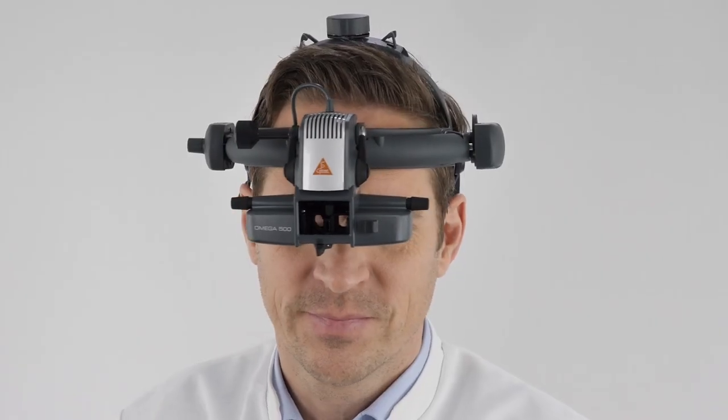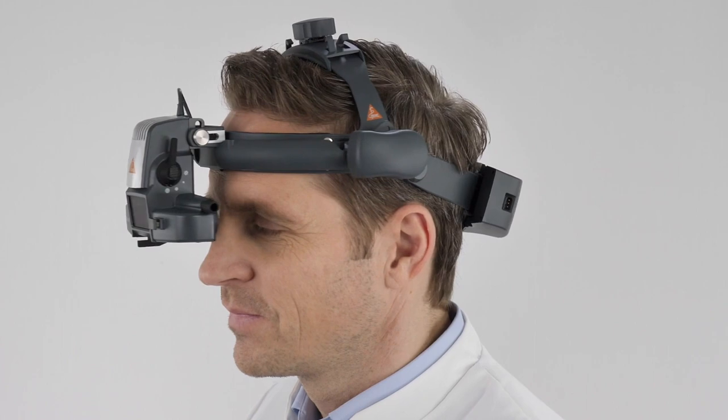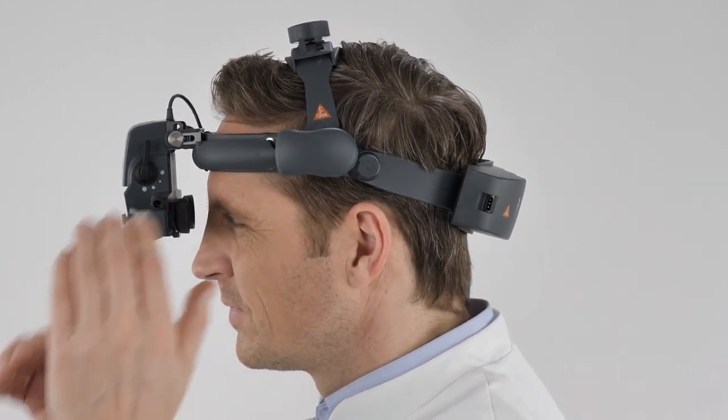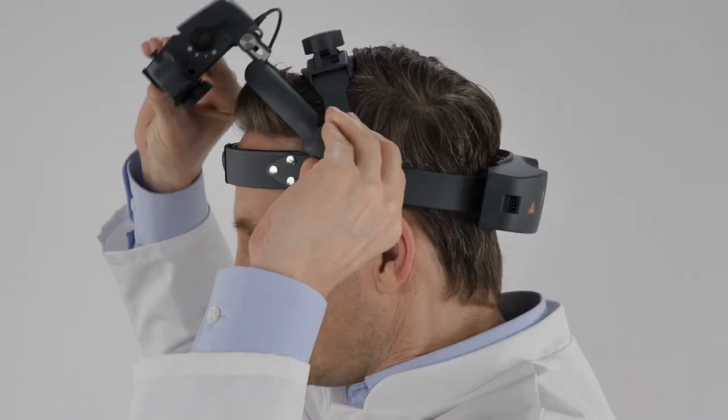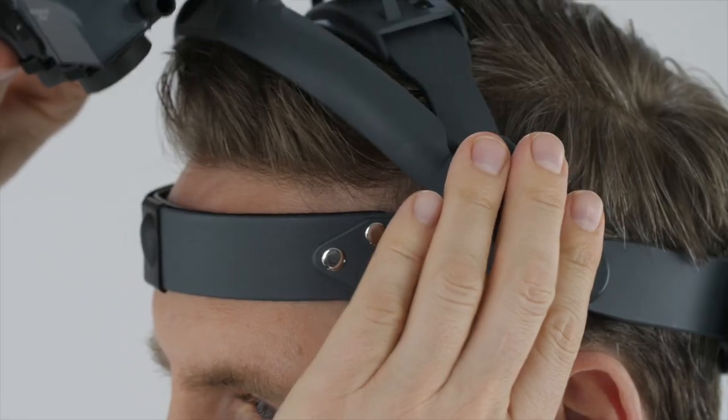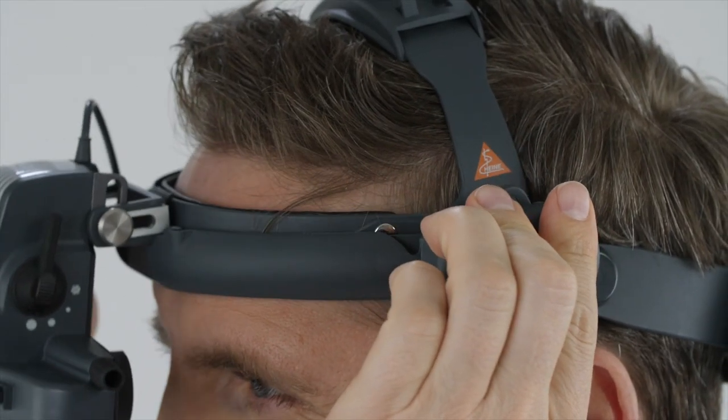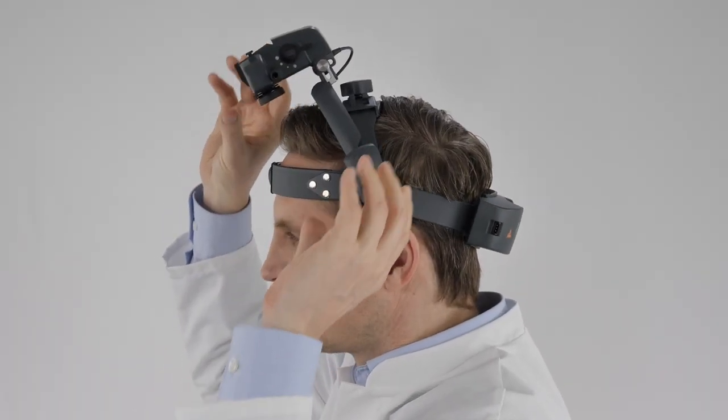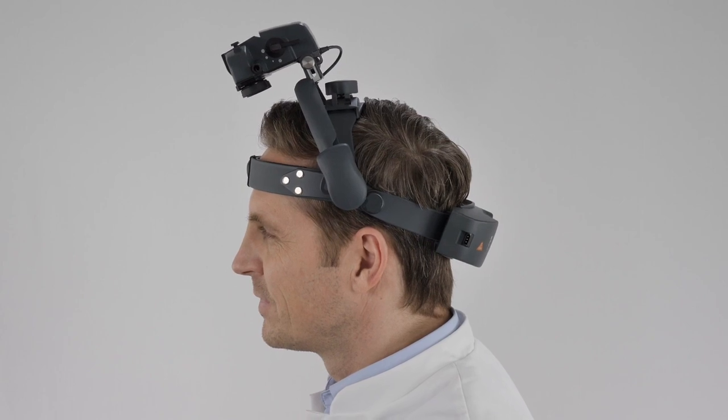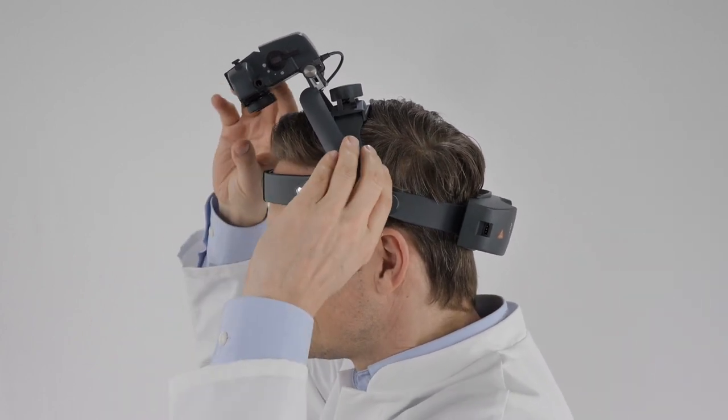First, make sure the optics carrier is in working position. Then put your left hand on the large position control on the left side of the headband. This allows you to adjust the optics up or down. The advantage of this design? You can fold the optics unit upwards into a rest position, for example, for a short patient conversation.